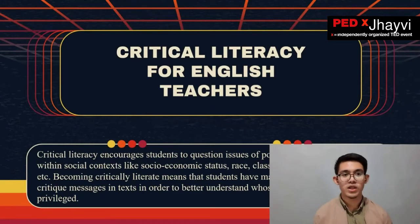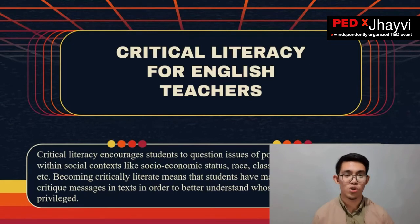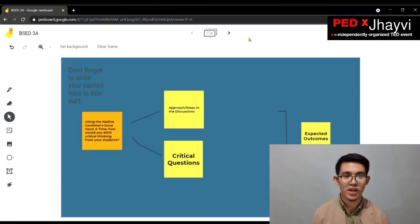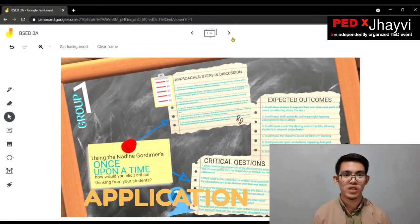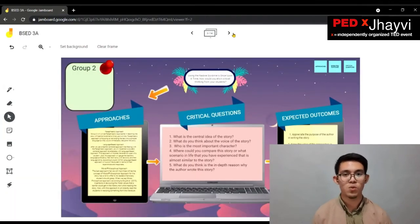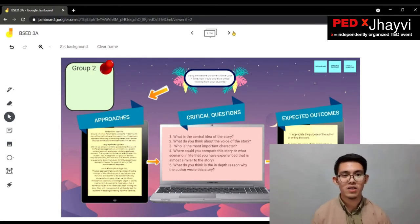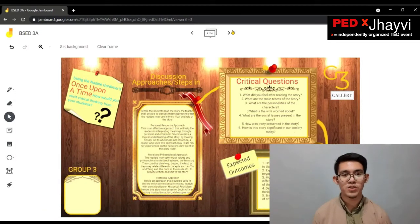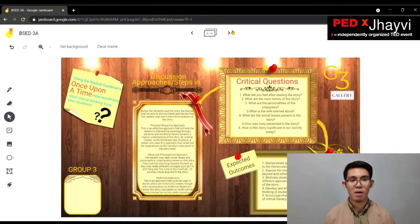For example, rather than just asking 'Who are the characters?', how would you make that question more complex to promote critical thinking? After understanding critical literacy, we proceeded to the application. I let my students go to a Jamboard session and collate questions that would elicit critical literacy from their students. We used one literary piece — 'Once Upon a Time' by Nadine Gordimer — and students created their own critical literacy questions. Here are some samples of how the application part was done.